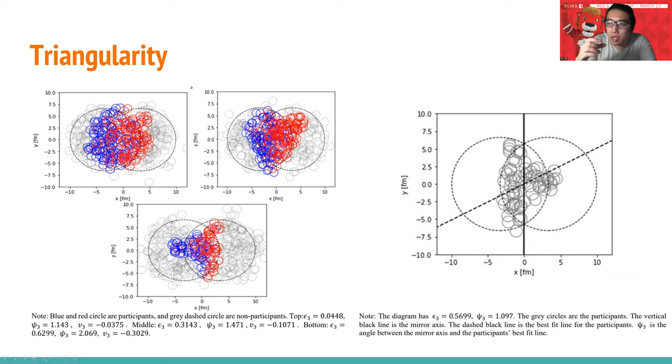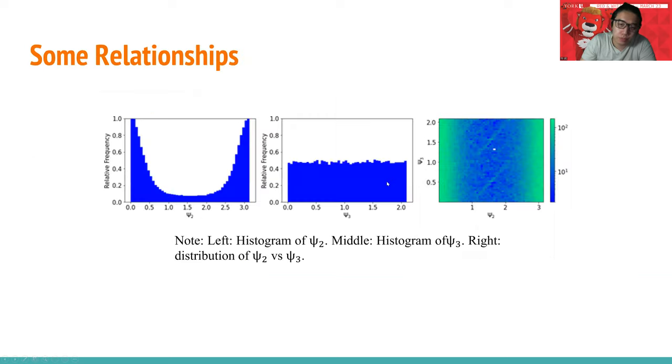For phi 2, we have phi 3 also for triangularity in some way. Phi 3 is the best-fit line, the difference between the best-fit line and the mirror line, which is here. It's this angle over here. Now we also want to do some deeper research on the relationship between these parameters.